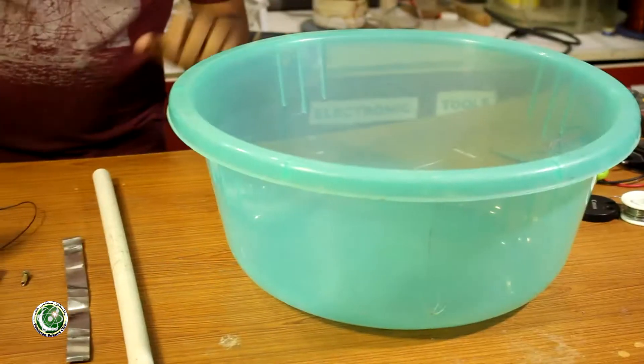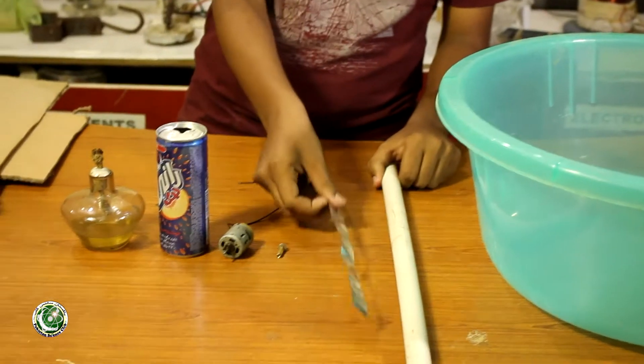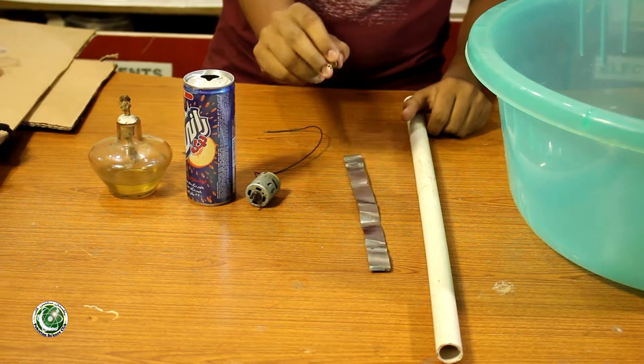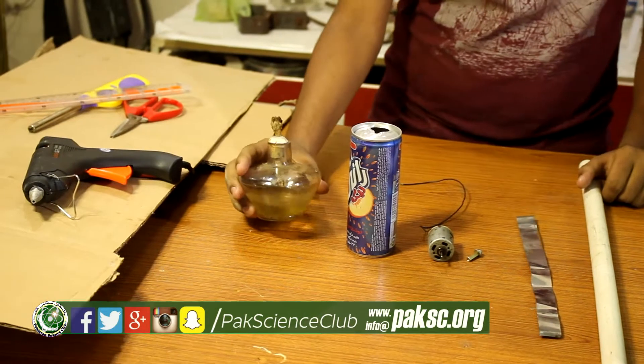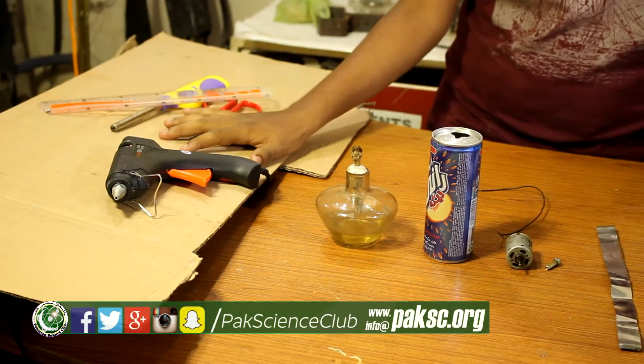For this, we have a plastic tub, PVC pipe, iron strip, metal spacer, DC motor, cane, spread lamp, some tools and cardboard.